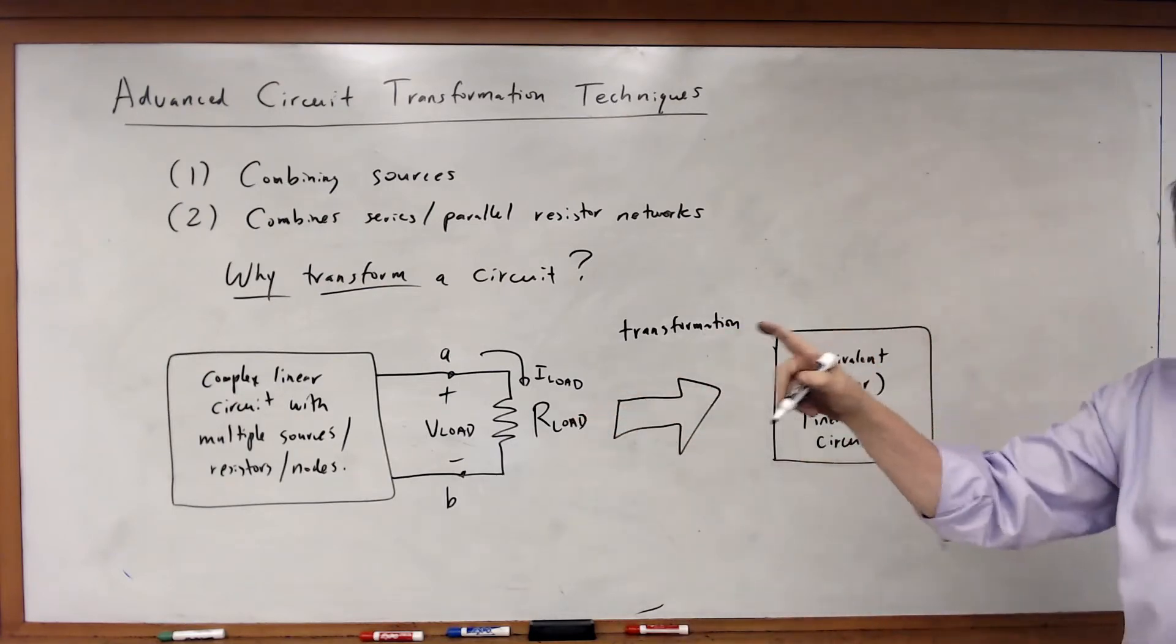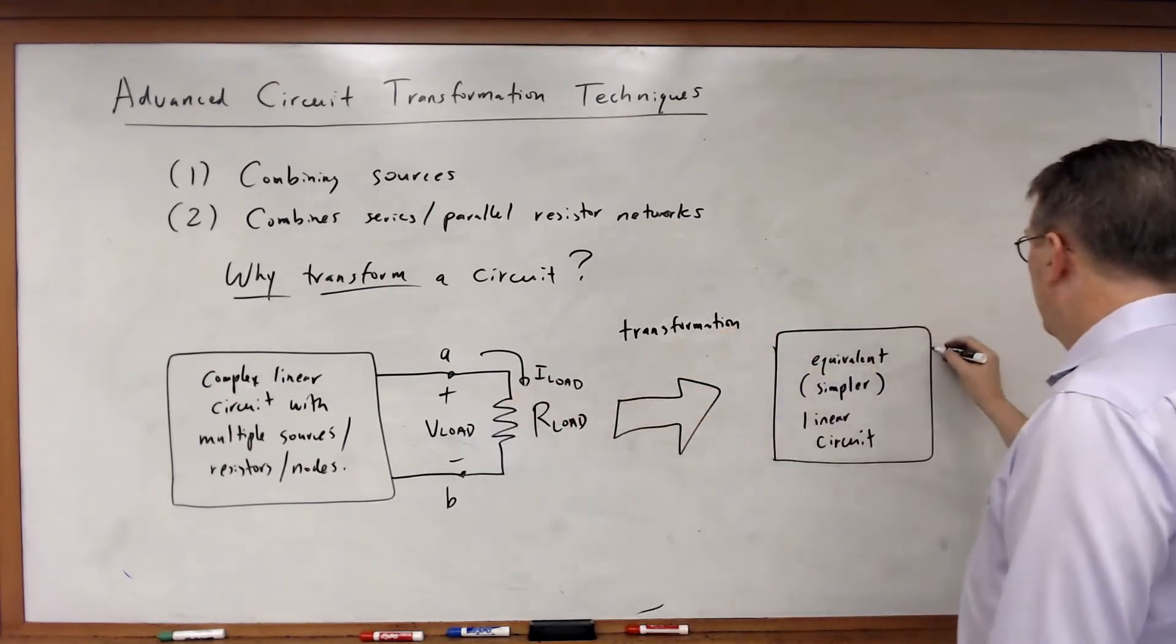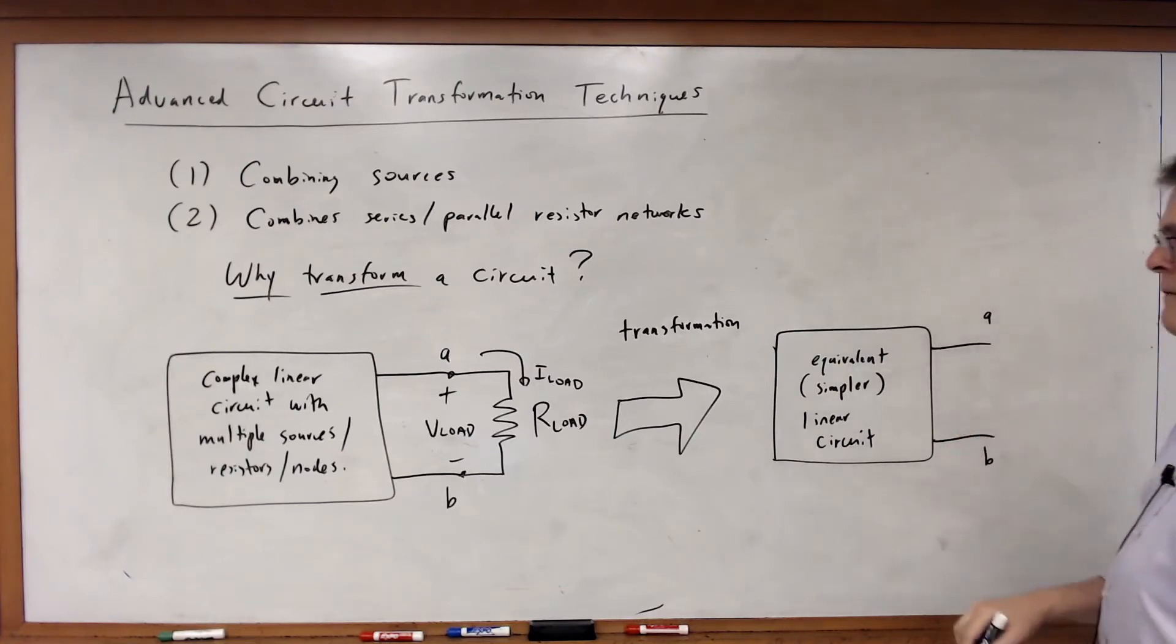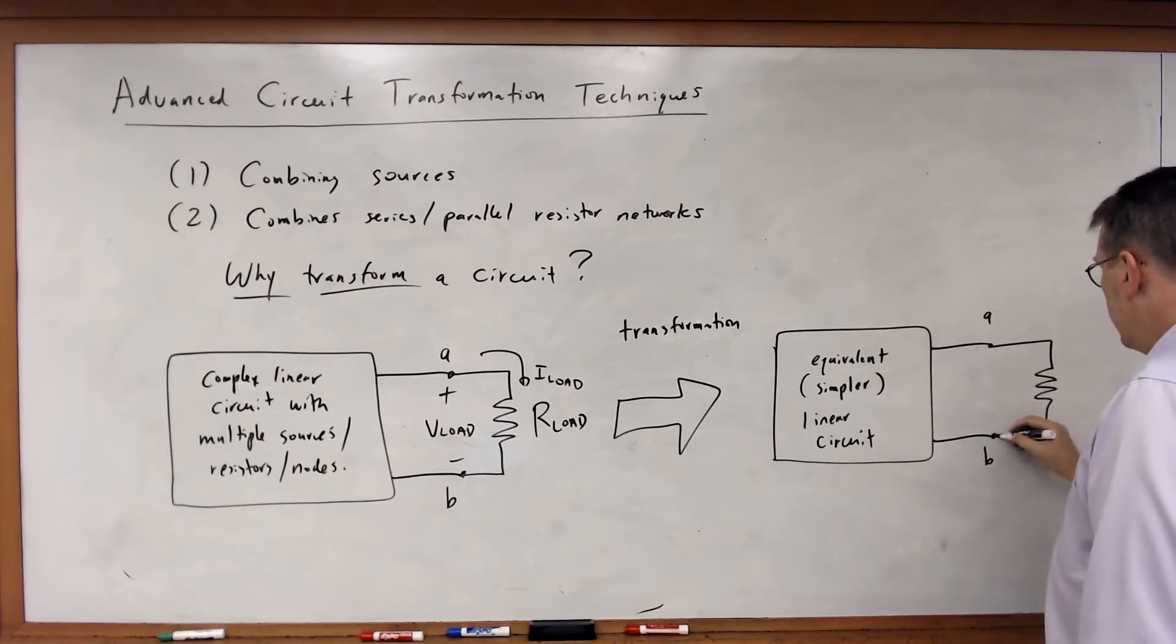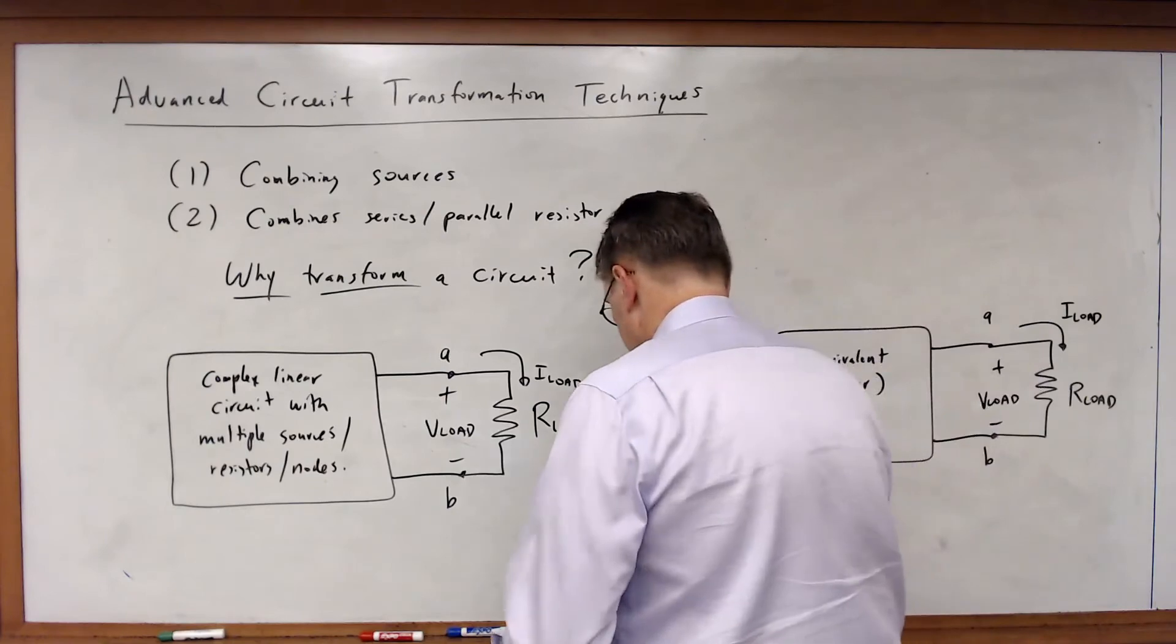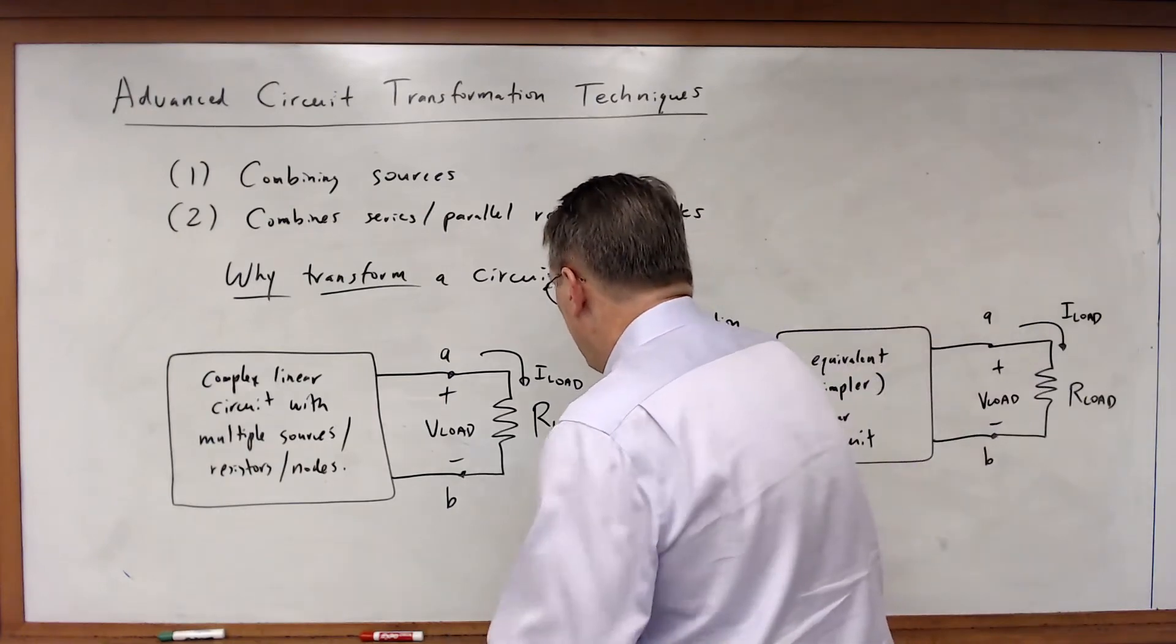And if I do this transformation correctly, I'll have the same two nodes, A and B, still available to me. And if I connect the same R-load across those two nodes, I should get exactly the same voltage and current. And that's the important part.